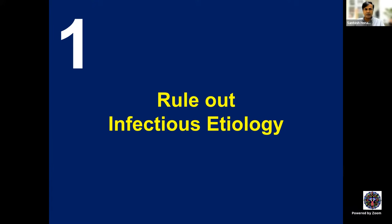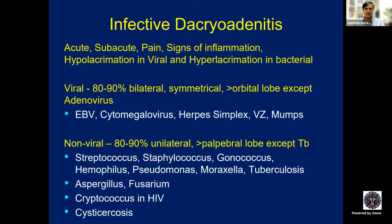Whenever you have a patient with lacrimal gland swelling, you must rule out infectious etiology. Infectious etiology can be acute or subacute. Pain is the predominant symptom. Signs of inflammation include eyelid edema, periocular inflammation, S-shaped deformity, and obliteration of the lid crease. Hyperlacrimation is very characteristic in viral dacryoadenitis; in bacterial dacryoadenitis it is hypolacrimation.